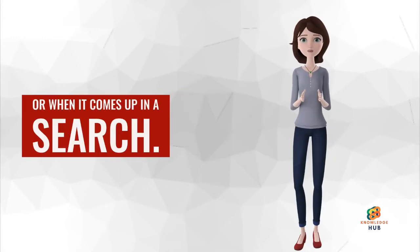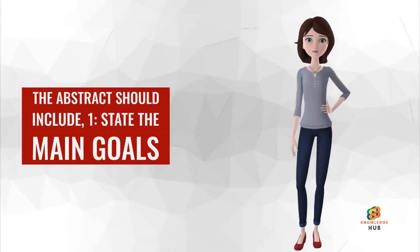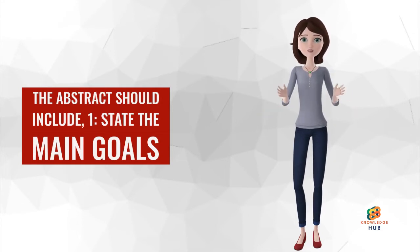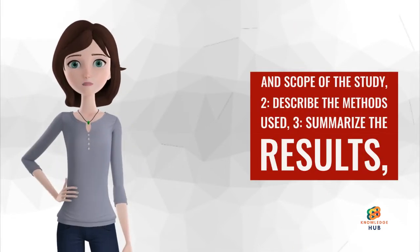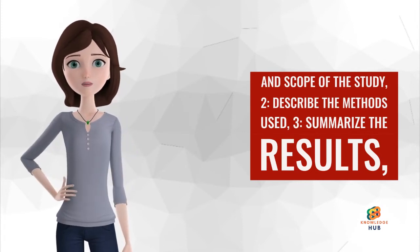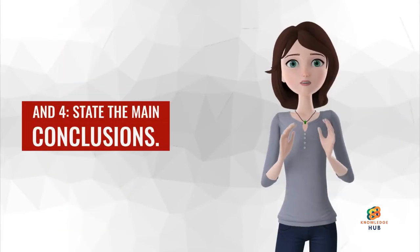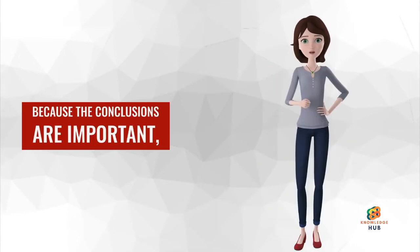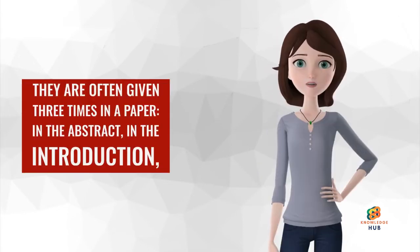The abstract should include: one, state the main goals and scope of the study; two, describe the methods used; three, summarize the results; and four, state the main conclusions. Because the conclusions are important, they are often given three times in a paper: in the abstract, in the introduction, and most likely in the discussion.